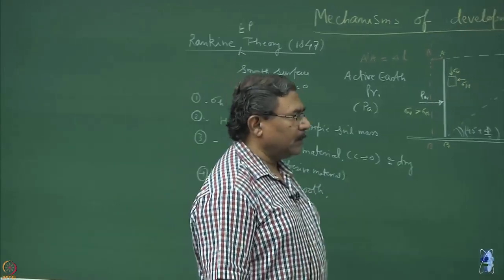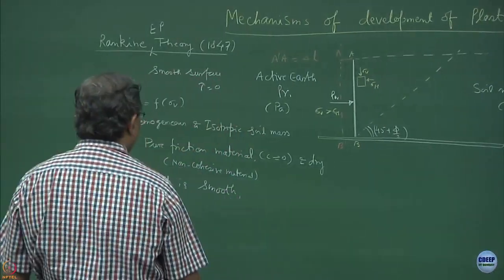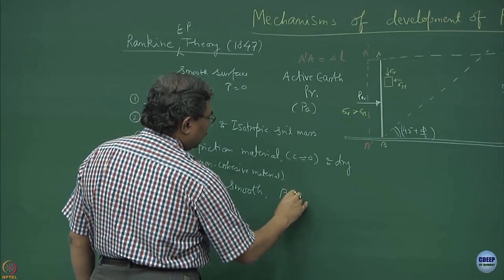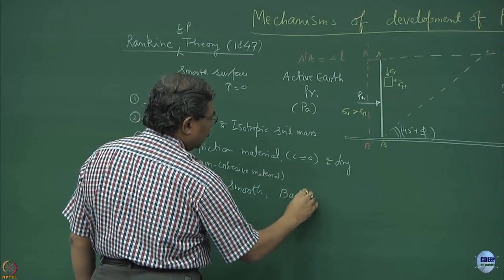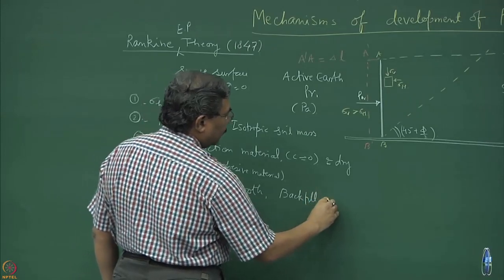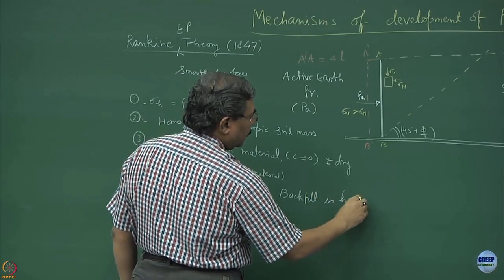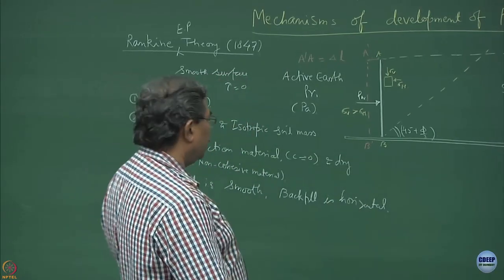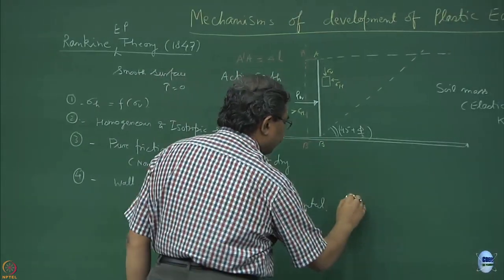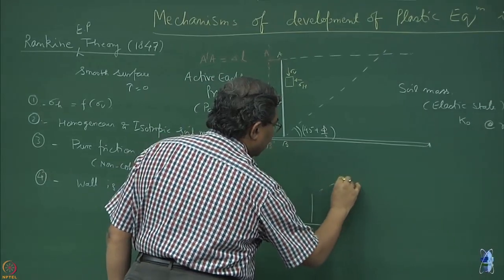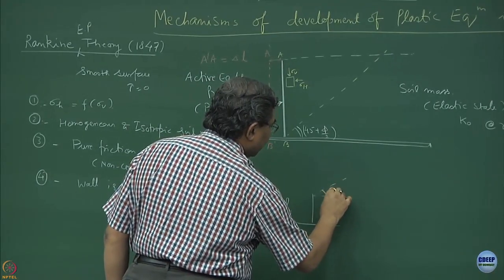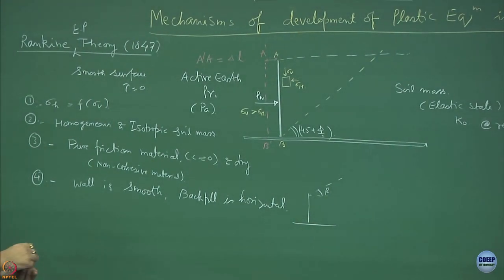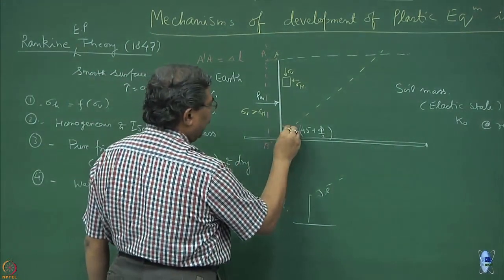There is no friction being mobilized on the wall itself because of the backfill, and the backfill is horizontal. There could be a situation where the backfill could be inclined at an angle of beta — this is what we will be studying later on. The wall angle is at 90 degrees.